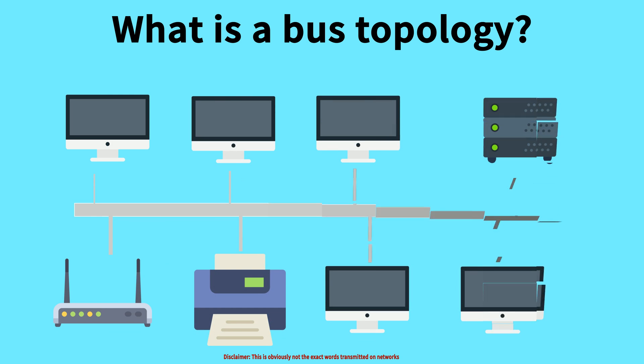In a bus network, every component in the network is joined directly together by a wire. If one client wants to send or receive data to or from another client, they can do so directly without the need for a server. Servers can also be present in these networks, but are not required.